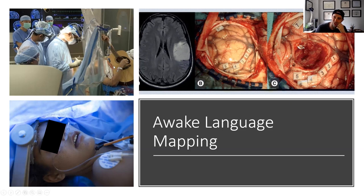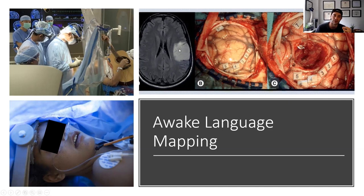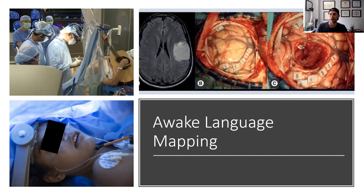You've all seen the glamour shot of someone playing guitar because you want to make sure a musician can still play — but that's few and far between. Realistically, it's more for media than anything. A tumor in the motor strip is super important, especially on the dominant hemisphere — 90 percent of people are left-sided dominant for language. You wake someone up and have them talk, performing tasks of repetition, visual naming, and sentence completion. You map out areas where stimulation causes them to stop talking, and you preserve those areas.